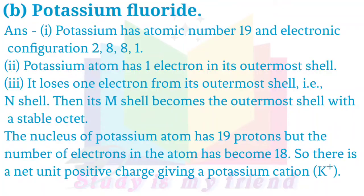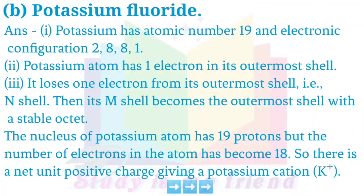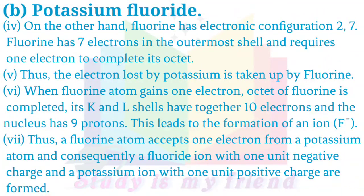B. Potassium fluoride. Answer: Potassium atom has one electron in its outermost shell. It loses one electron from its outermost shell (N-shell). Then its M-shell becomes the outermost shell with a stable octet. The nucleus of potassium atom has 19 protons, but the number of electrons in the atom has become 18. So there is a net unit positive charge, giving a potassium cation K⁺. On the other hand, fluorine has electronic configuration 2, 7. Fluorine has 7 electrons in the outermost shell and requires 1 electron to complete its octet. Thus, the electron lost by potassium is taken up by fluorine.